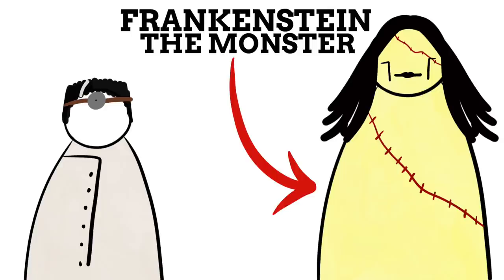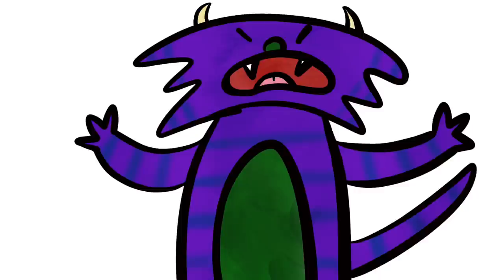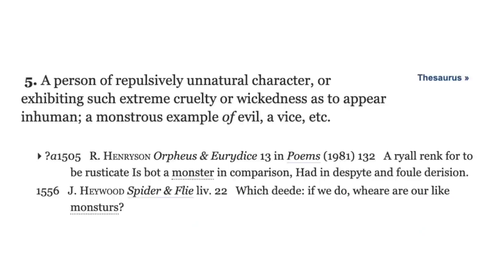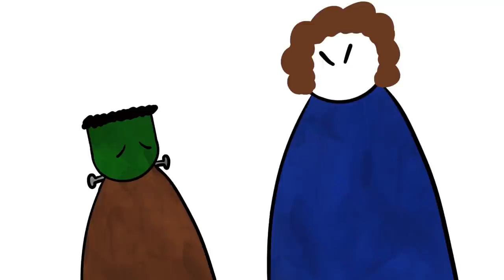The final idea relates not so much to the monster being called Frankenstein, but instead to calling Frankenstein the monster. While monster is first and foremost a noun we use for big, scary, more often than not fictional creatures, we can also use monster as a term to describe people. One of the OED's definitions of monster is 'a person of repulsively unnatural character, or exhibiting such extreme cruelty or wickedness as to appear inhumane.' At the start of this video, I included Thatcher as my example of using monster in this sense.